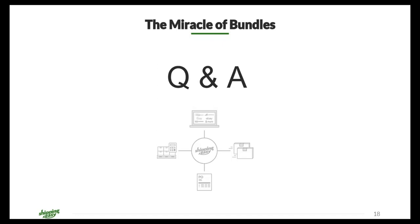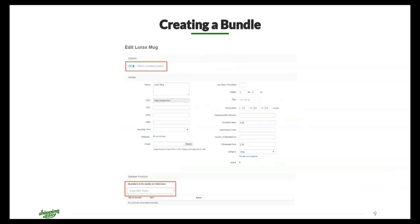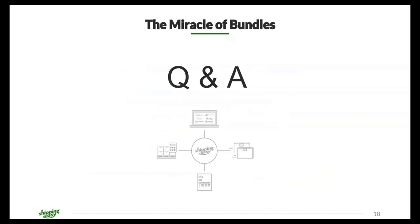First question: how do I remove a bundle once it's been created? Great question. If you want to remove a bundle, all you need to do is toggle the option button from on to off. That option at the top of the page — the blue toggle that says 'This is a bundled product' — just toggle it to off, and it will no longer be listed as a bundle or associated with those component items. You'll want to go back and update the stock level for this product once it's no longer a bundle, so that we can make sure we're tracking it accurately.